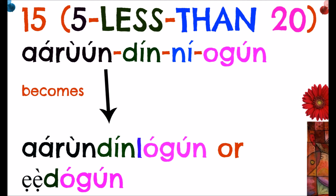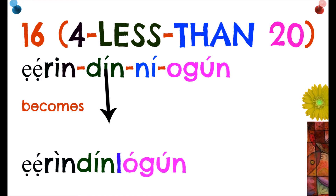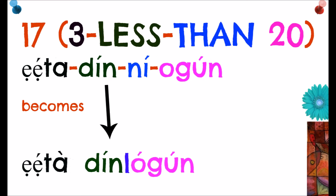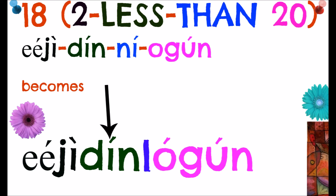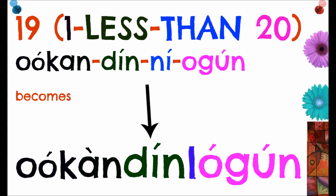Sixteen is written as 'four less than twenty' — 'erin din ni ogun' — which becomes 'erin dilogun.' Seventeen is written as 'three less than twenty' — 'eta din ni ogun' — which becomes 'eta dilogun.' Eighteen is written as 'two less than twenty' — 'eji din ni ogun' — which becomes 'eji dinlogun.'